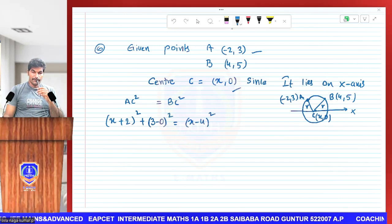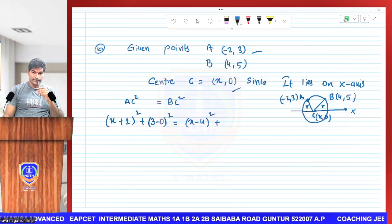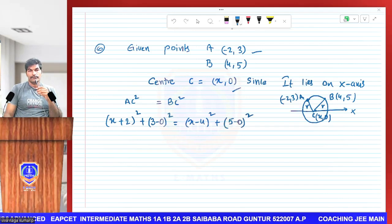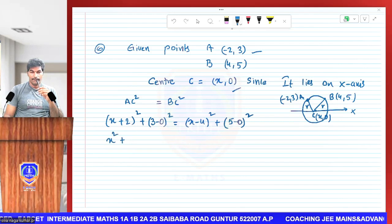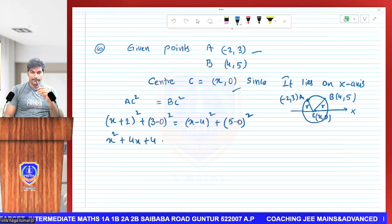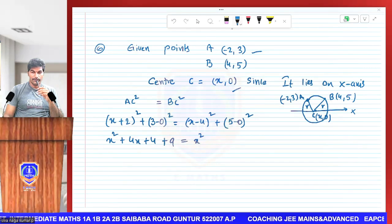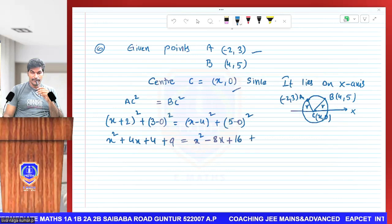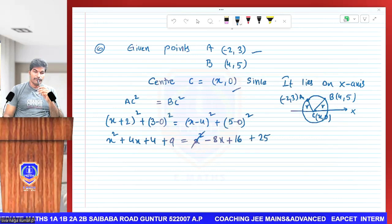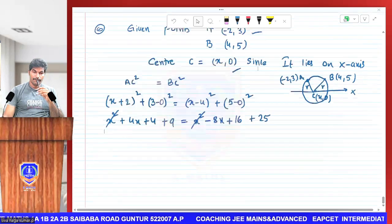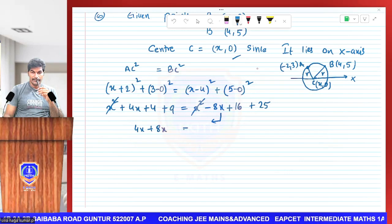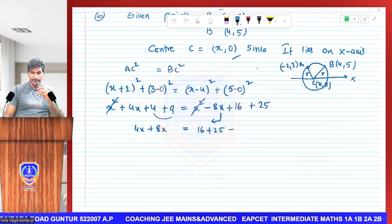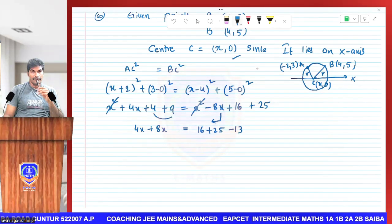We're going to write (3 - 0)² equals BC². (x - 4)² + (y - 0)². Expansion: x² + 4x + 4 + 9 = x² - 8x + 16 + 25. Both sides x² cancel. -8x then 4x + 8x = 4 + 9 = 13. So 16 + 25 - 13 on the left side.